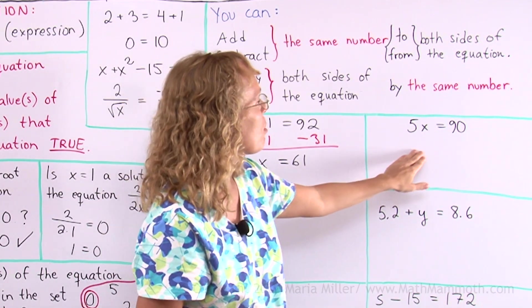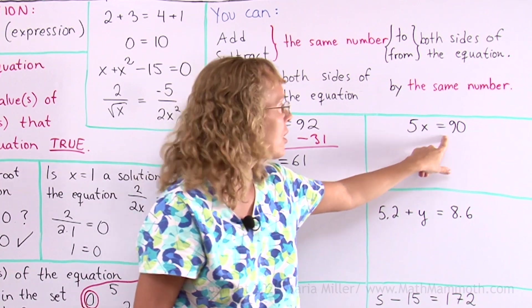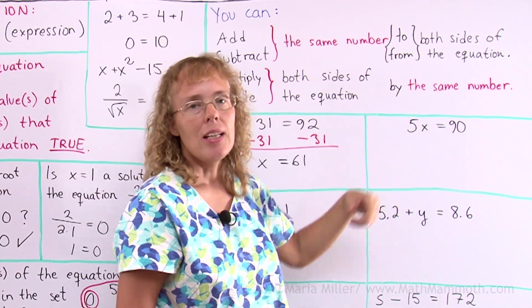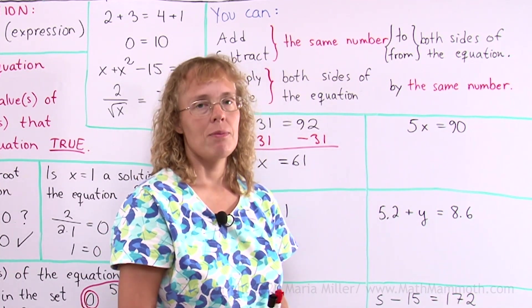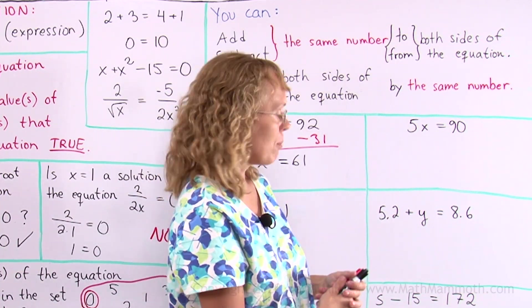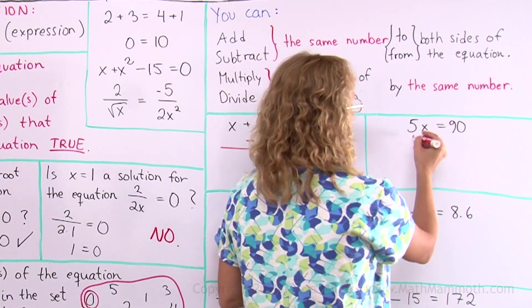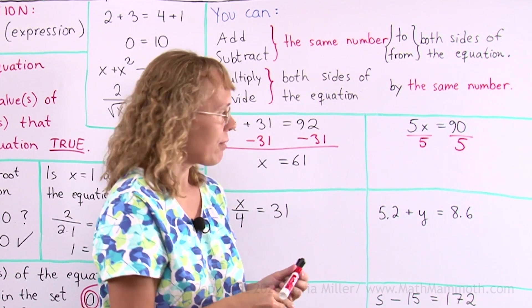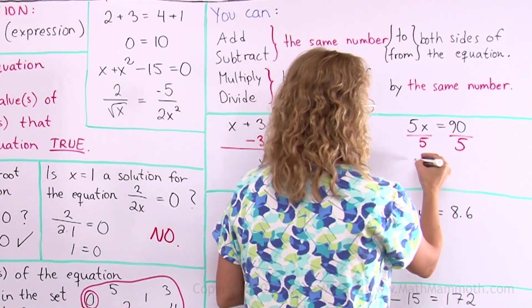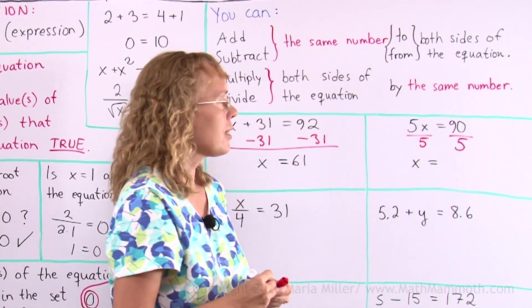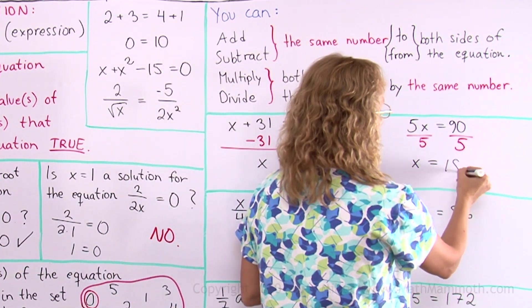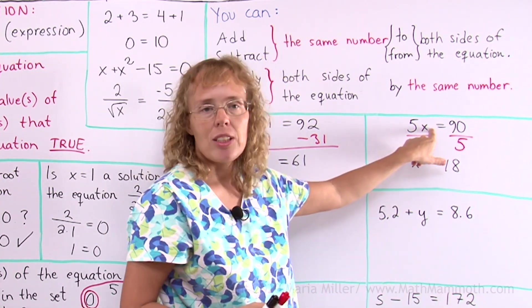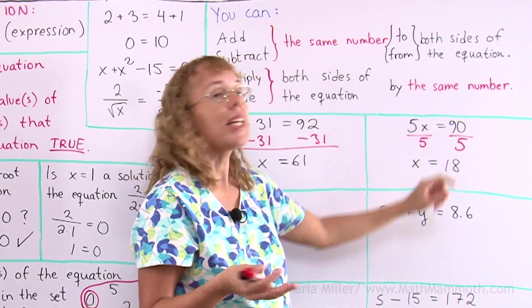Here, 5x equals 90. This is 5 times x equals 90. We call it a multiplication equation because the x is multiplied by some number. And to solve it, I will use the opposite operation. I'll use division to solve it. I'll divide both sides by 5. I could mark it like this. Divide by 5, divide by 5. And 5 times x divided by 5 will leave me x alone. On this side, I need to calculate 90 divided by 5, which is 18. Now I have a solution, but now I'll check it. I'll put the 18 here in the original equation. 5 times 18. Is it 90? Yes, it is. It checks.